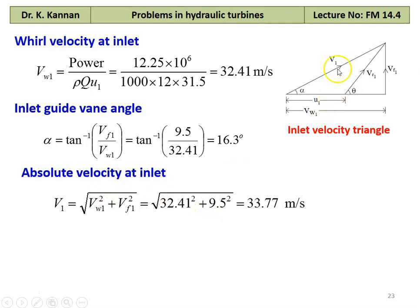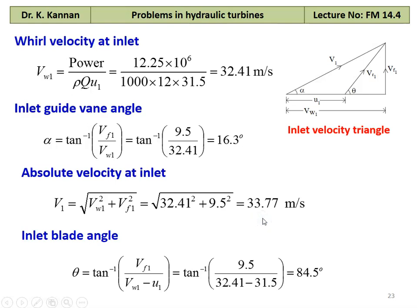The absolute velocity at the inlet: V1 equal to square root of Vw1 squared plus Vf1 squared, which is square root of 32.41 squared plus 9.5 squared equal to 33.77 meters per second. The inlet blade angle theta equal to tan inverse of Vf1 divided by (Vw1 minus U1), which is tan inverse of 9.5 divided by (32.41 minus 31.5) equal to 84.5 degrees.